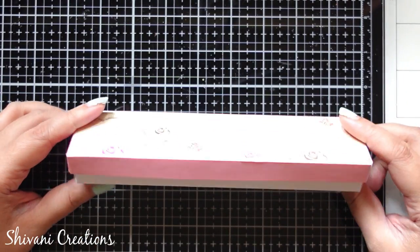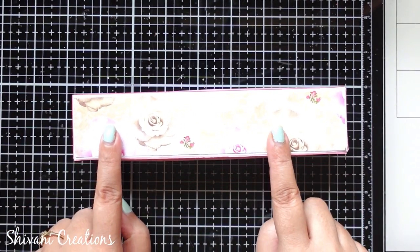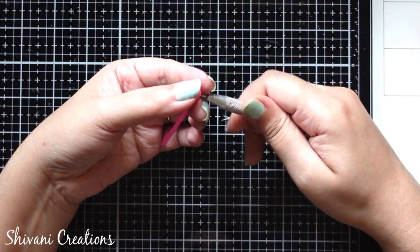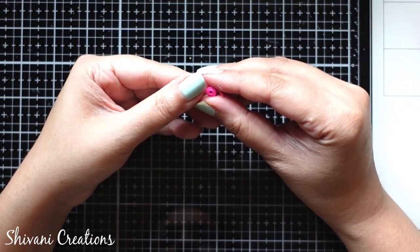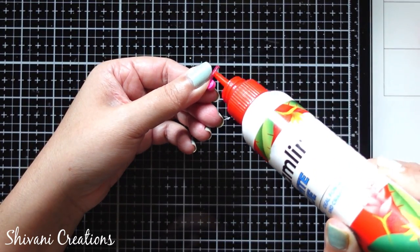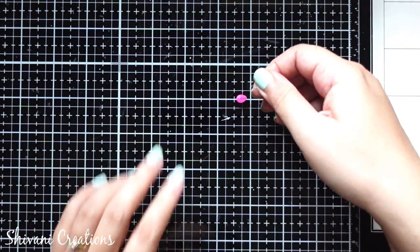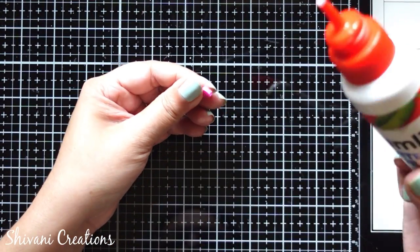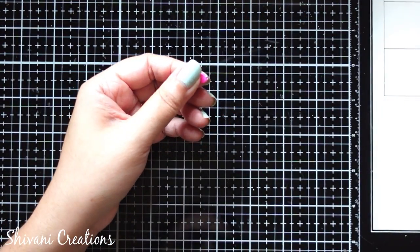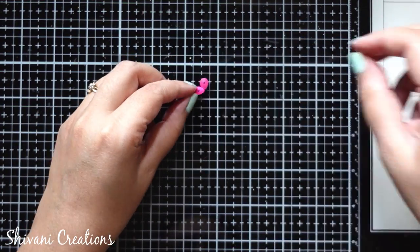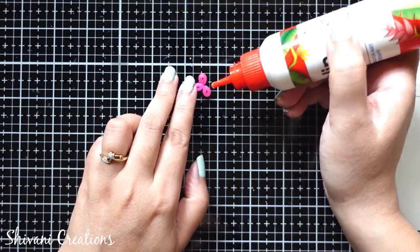Now it's time to make the quilling flowers. Flowers are very easy. Here I'm taking half strip of neon pink color and just making one tight teardrop shape. Similarly, I have prepared some more teardrops using different pink color strips - light pink and dark pink. I'm just joining these petals together using different colors of pink petals.